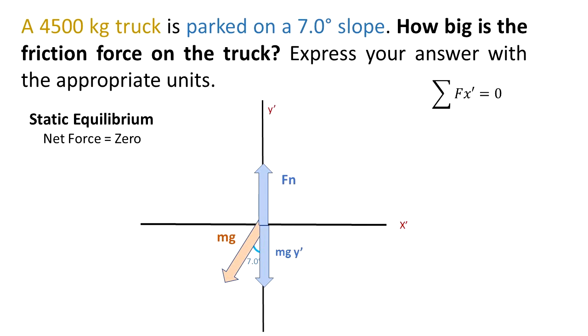There is a component of Mg that is going into the negative x' direction. The green arrow represents the Mg x', but what happens if we only have that component, that force? That means that there is imbalance. In that case, if we only had the Mg x' component, the truck would slide.